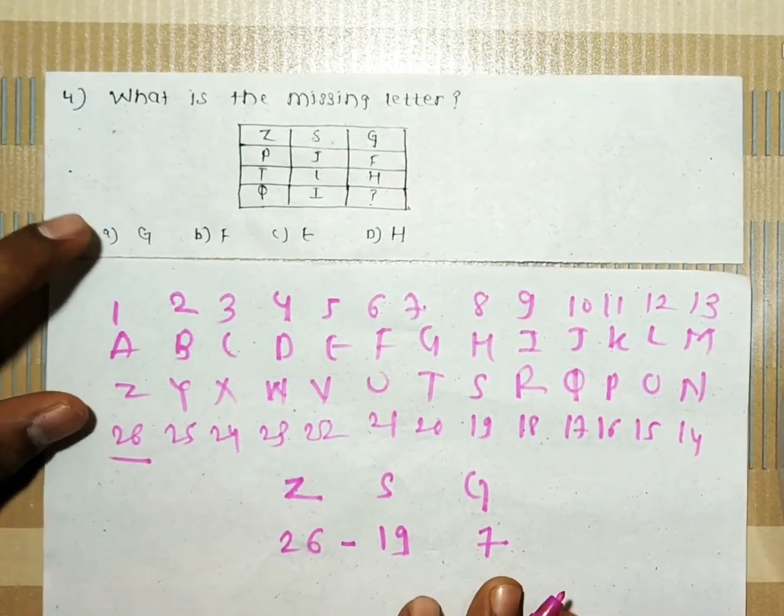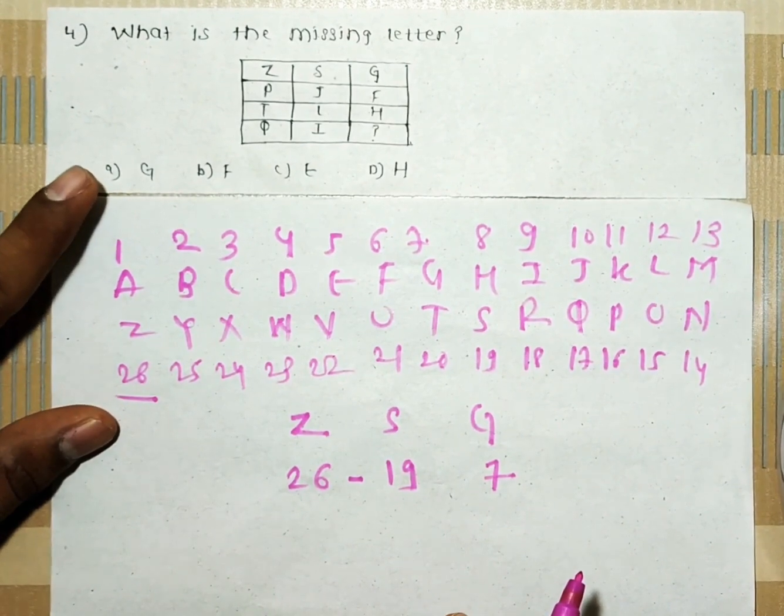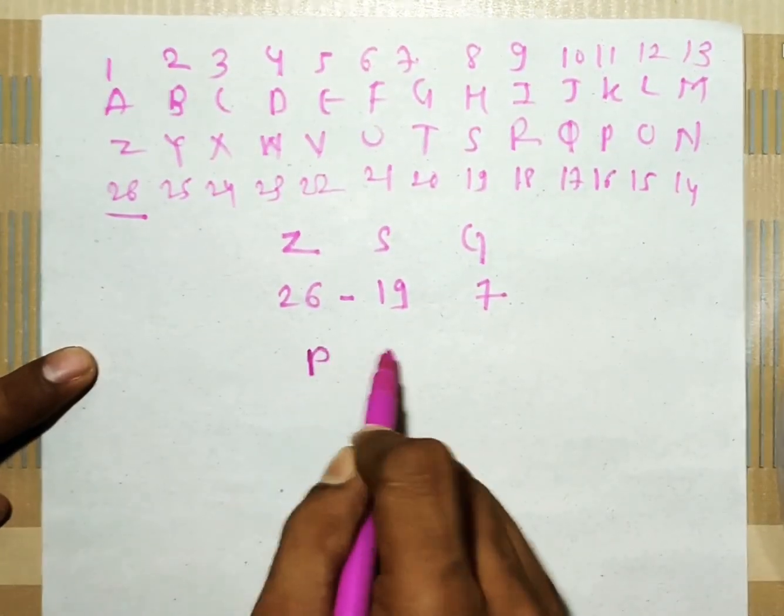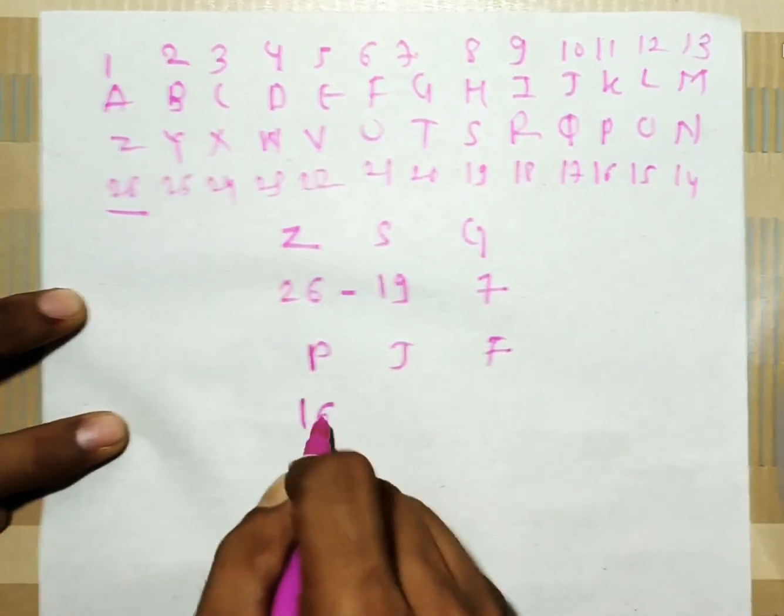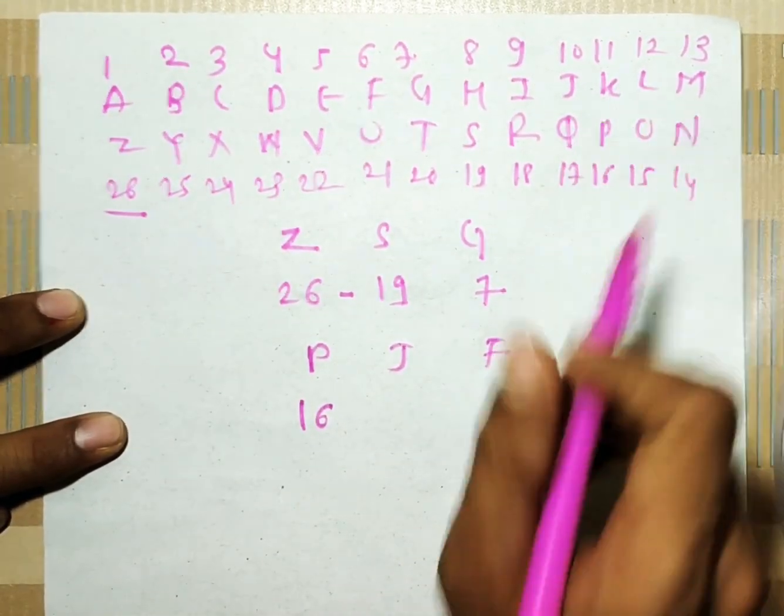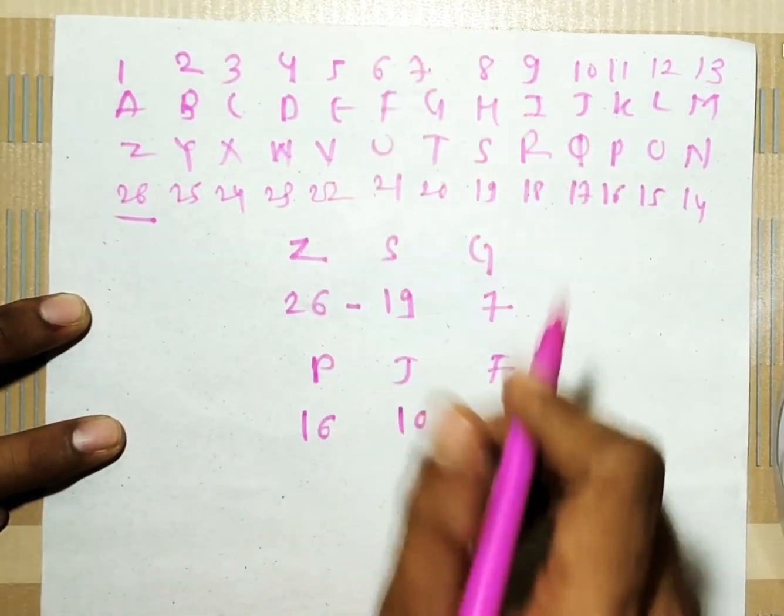Now similarly for the second row also. P, J, and F is there. So let's check for P, J, F. For P the number is 16. So 16. For J the number is 10. So 10. And for F the number is 6.